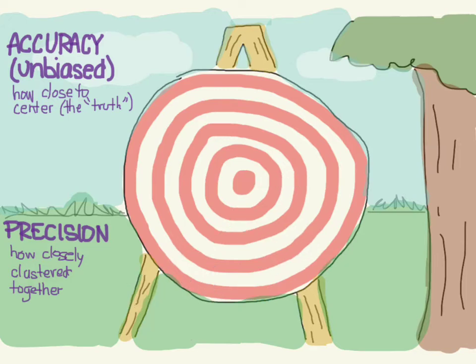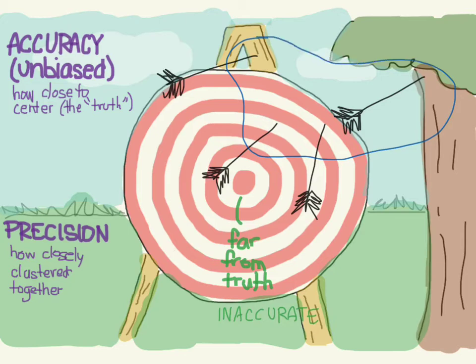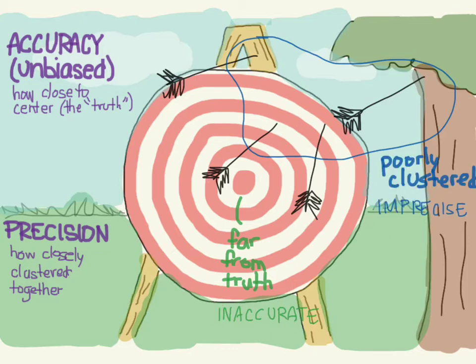Let's try again. So this one you can see is not at all close to the center, so it's not close to the truth — we'll call this one inaccurate. And also, if you look at how it's clustered, this guy is all over the place. He shot the target twice, but then he shot the stand for the target, and he also hit the tree once. So he is not very clustered together, so this is not precise either. This one was inaccurate and imprecise.